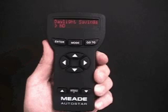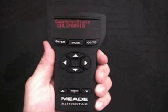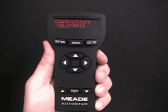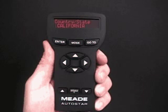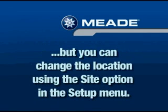Daylight savings displays. March 6 does not fall during daylight savings time. As NO is already displayed, just press Enter. The first time you use Autostar, it will ask you for your observing site's location and also for the telescope model. This information will not be asked for again the next time you initialize Autostar — it's asked for only once. However, if you wish to change the observing site location information at a future date, you can do so by using the site submenu, which is found under the setup menu.